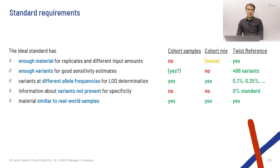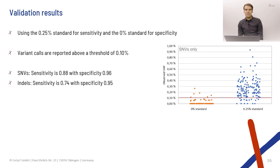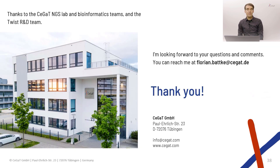I don't want to end this talk without showing some validation results. Using the data shown earlier — 0.25% standard for sensitivity, 0% standard for specificity, and calling variants from 0.1% — sensitivity and specificity for both indels and SNPs are actually quite good. Comparing data from the three approaches we used, the sensitivity estimate is very similar for all of them, but the confidence interval is much smaller when you have more variants. Importantly, the TWIST reference standard is the only approach that gives us a specificity estimate.